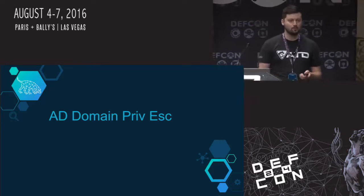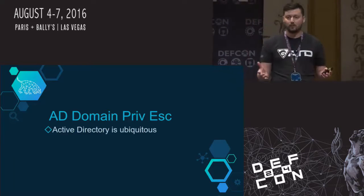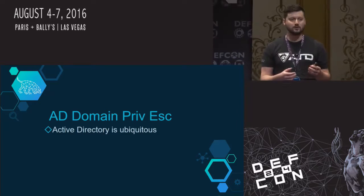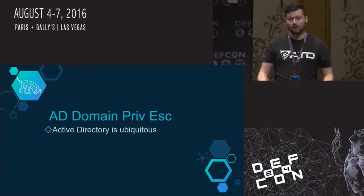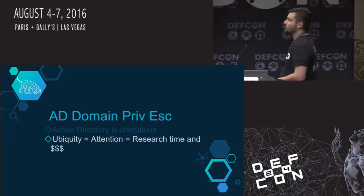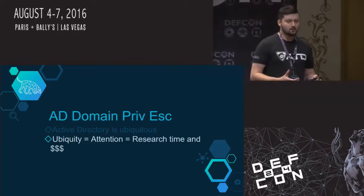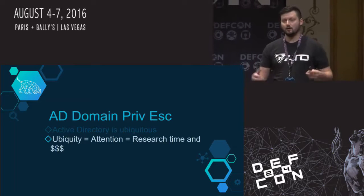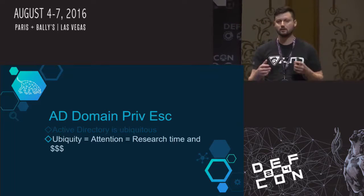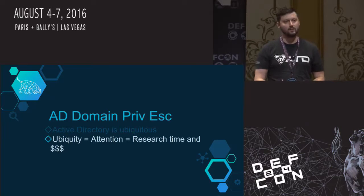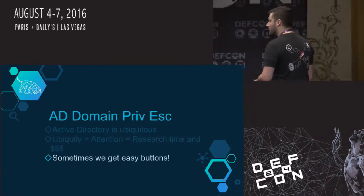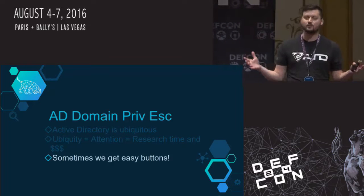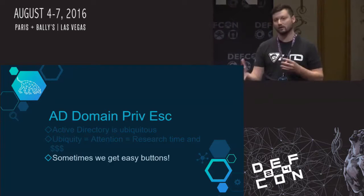Active Directory is effectively ubiquitous. As Sean Metcalfe stated, more than 95% of Fortune 500 organizations use Active Directory. That ubiquity means Active Directory is subject of a lot of attention from both defenders and attackers — a lot of time, energy, money, blood, sweat, and tears going into learning how to best defend and attack AD environments. As penetration testers and red teamers, we have the benefit of nice easy buttons: MS08-067, MS14-68, Kerberoast, GPP. The list goes on.